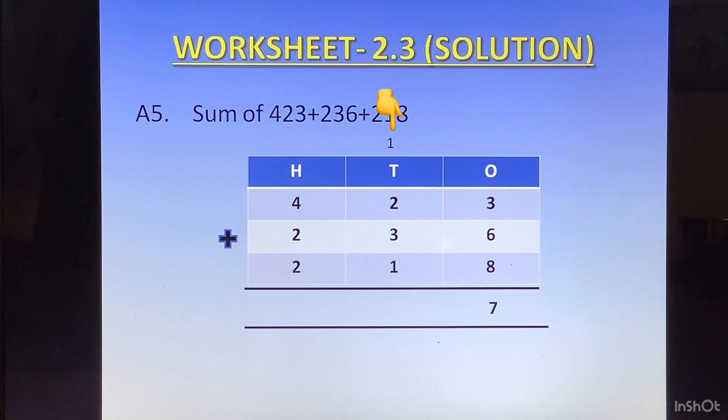Then we go to the tens column. 2 plus 3 is 5, plus 1 is 6, and plus 1 of the carry is 7. Then we go to the hundreds column. 4 plus 2 is 6, plus 2 is 8. The answer becomes 877.